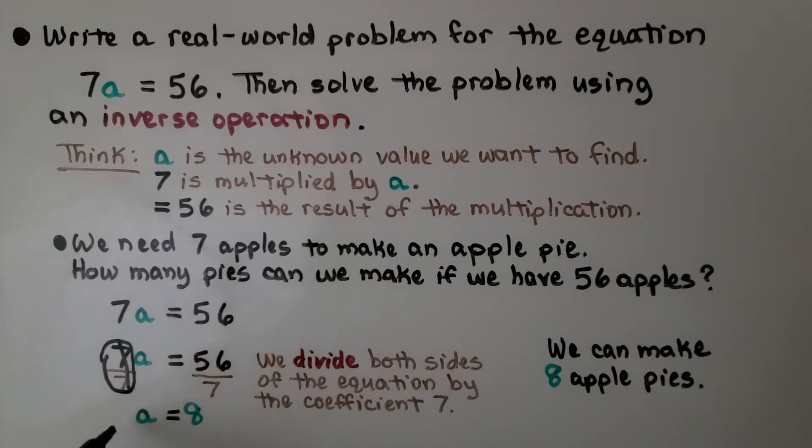We have 1a, but we don't write a 1 as a coefficient. And on this side we have 56 divided by 7, which is 8. That tells us we can make 8 apple pies.